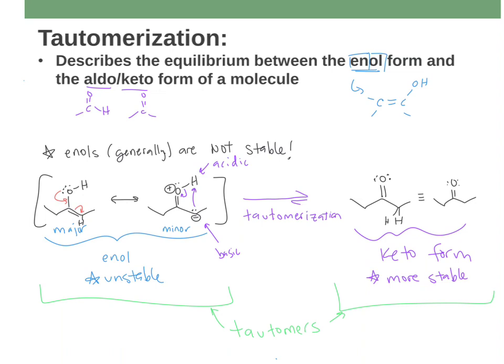Now I said that almost always the enol is the unstable one and the keto form is the more stable one, so you should pretty much always turn your enol into the ketone or the aldehyde. Always, always just turn it back to the carbonyl. There are some exceptions though, let me show you those.